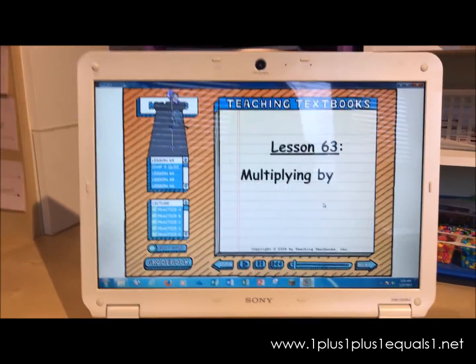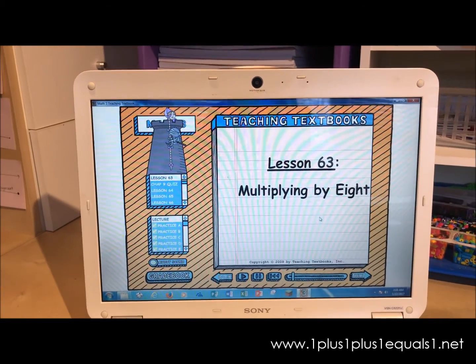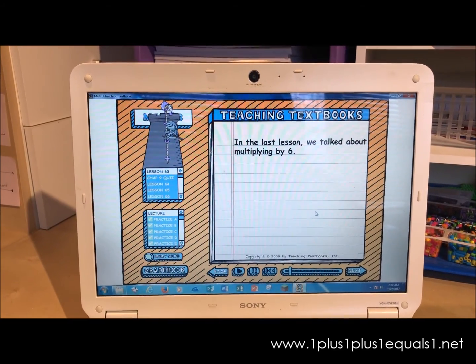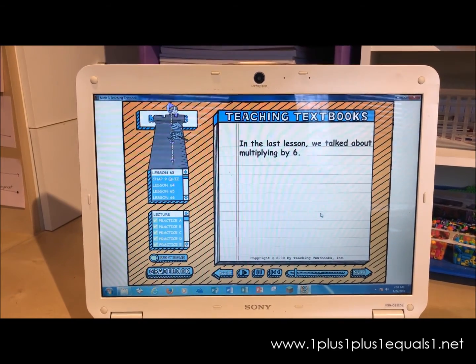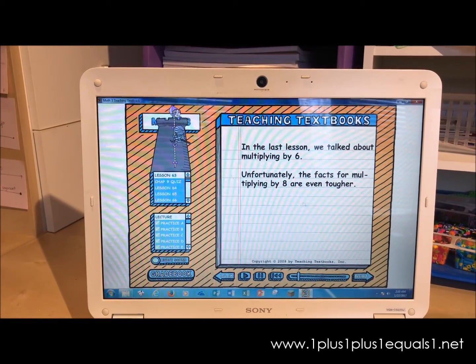This is not good. In the last lesson we talked about multiplying by 6, so in this lesson we're going to learn how to multiply by 8. And the bad news is the 8 facts are even tougher than the 6 facts. But there isn't anything that I can do about it, sorry.